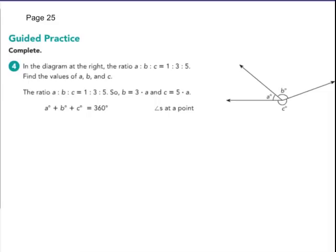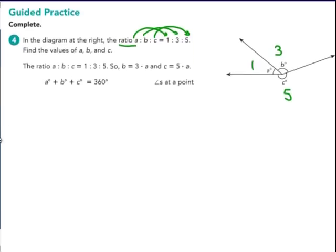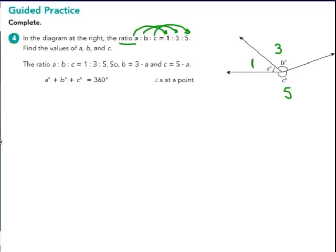Here's one for us to practice. In the diagram at the right, the ratio of A to B to C is 1 to 3 to 5. So again, I'm going to do 1 to 3 to 5. I'm going to follow the order. A goes with 1, B goes with 3, C goes with 5. Order always counts in a ratio. Find the values of A, B, and C. The ratio of A, B, and C, 1 to 3 to 5. And then you have to add to 360. They are angles at a point. I'm going to put an X on them.